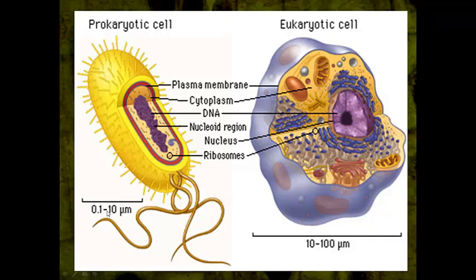Looking at the measurements — which one is bigger, prokaryotic or eukaryotic? Both of them have a plasma membrane, also known as the cell membrane. Both have cytoplasm and both have DNA. The DNA of a prokaryotic cell is small, like a little cheerio. Now here's the confusing part: prokaryotic cells do not have a nucleus; they have a nucleoid region, which is the area that's dense with DNA.